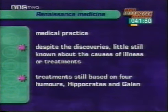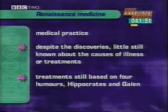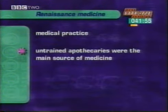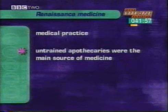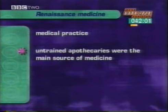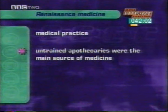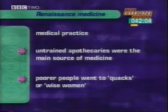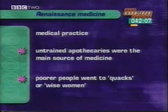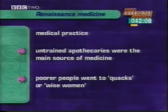Apothecaries provided most medicine from their shops. They weren't trained, but some had lots of experience and handed down wisdom. For poorer people there were quacks — cheap, unqualified operators — or local wise women with knowledge of herbs and simple treatments.